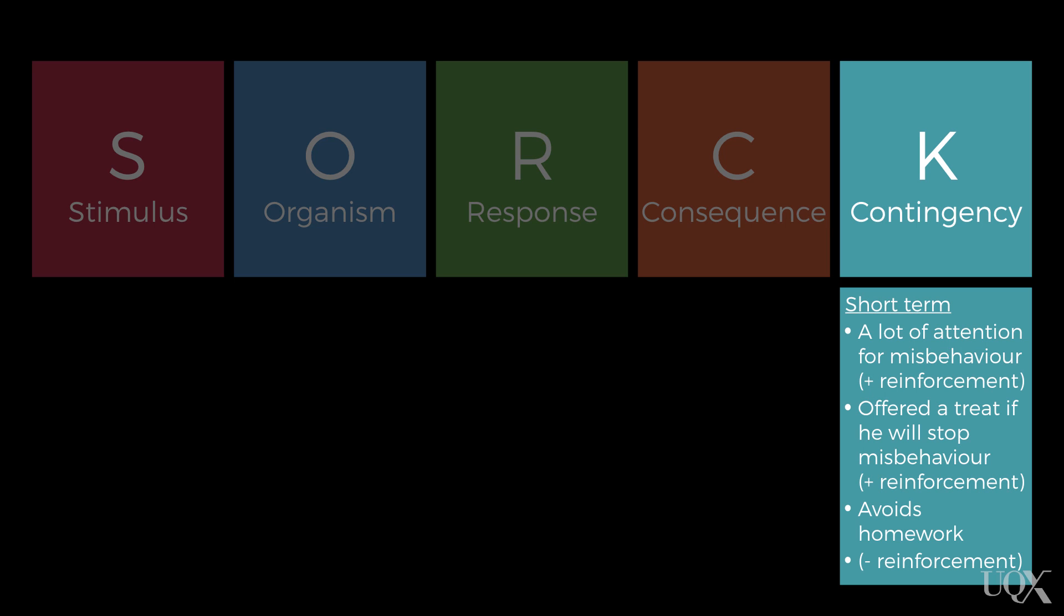Ultimately, Jamie also misses out on having to do his homework, which is a good outcome for him and represents another example of negative reinforcement. Jamie has been both positively and negatively reinforced for engaging in a range of problematic behaviors, and is more likely to do all of them again in the future.